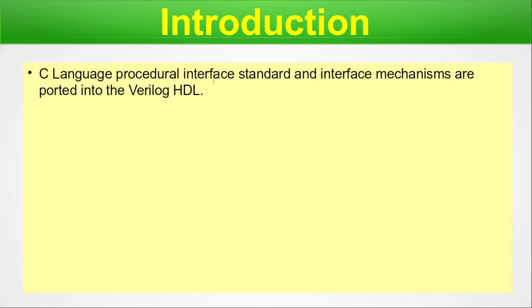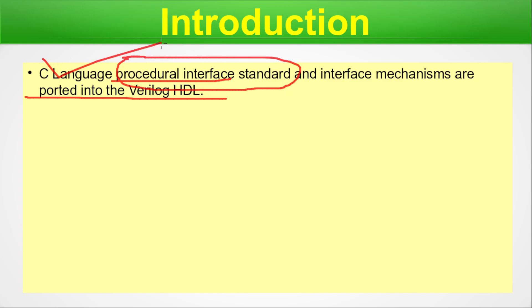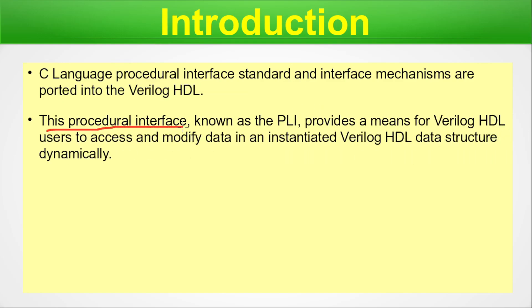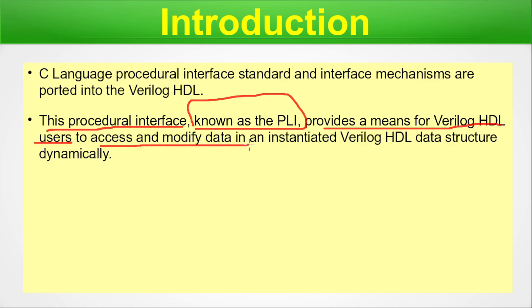Introduction. C language procedural interface standard and interface mechanisms are ported into the Verilog HDL — whatever procedural interface standard was existing in C language has been ported into Verilog. This procedural interface known as PLI provides the means for Verilog HDL users to access and modify data structures in an instantiated Verilog HDL data structure dynamically.